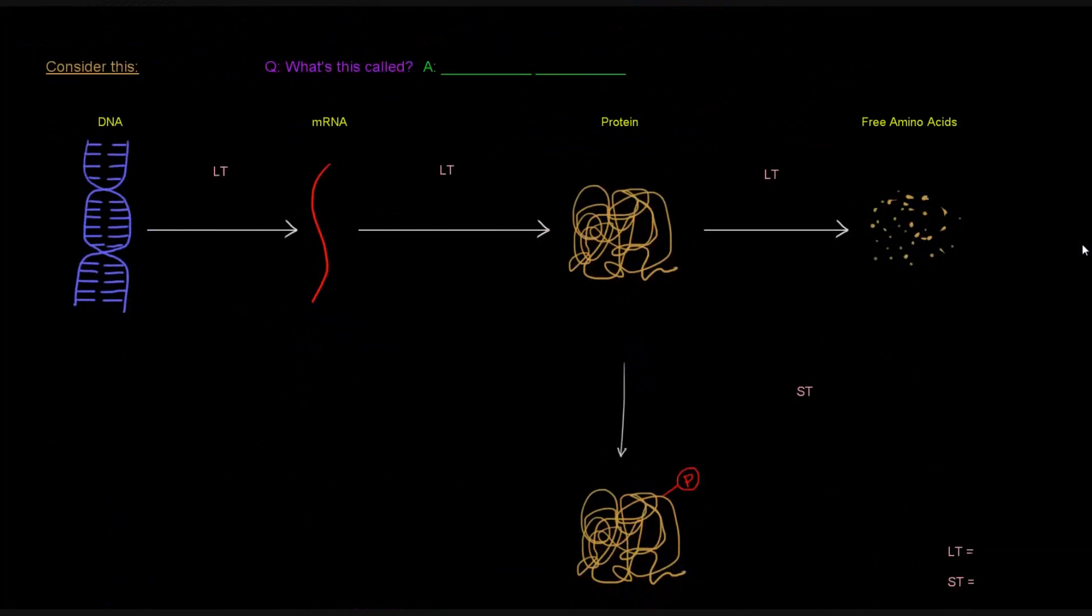So I want you to consider this here. In the DNA, we would have the gene for the HMG-CoA reductase enzyme, because it's a protein. So we would have a gene for it. And this gene for the HMG-CoA reductase can be transcribed into an mRNA transcript. And that transcript can, of course, be translated into the protein that is the actual functional enzyme.